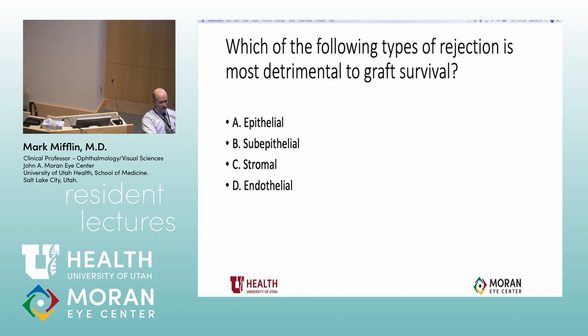Which of the following types of rejection is most detrimental to the survival of the graft — epithelial, stromal, or endothelial?